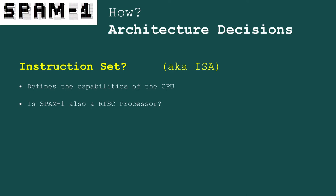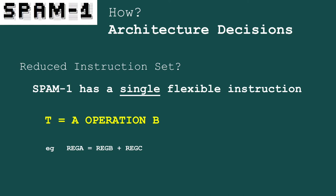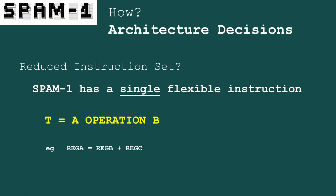I needed to decide on an ISA — an instruction set architecture. I wanted something really simple. SPAM1 has a single instruction — it's flexible but still just one. Each instruction takes two arguments and produces a result written to some target device, which could be a register or RAM. Every operation also emits status flags to indicate whether the result was negative, a carry, or several other conditions, and these flags can be used to control execution of any subsequent instruction.